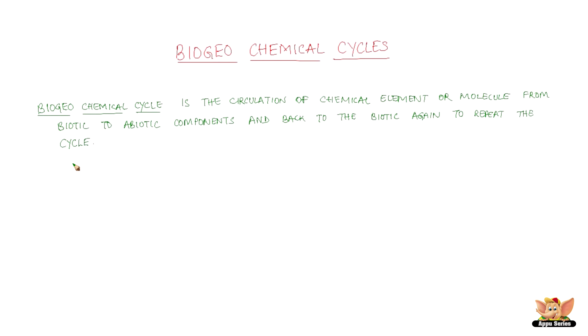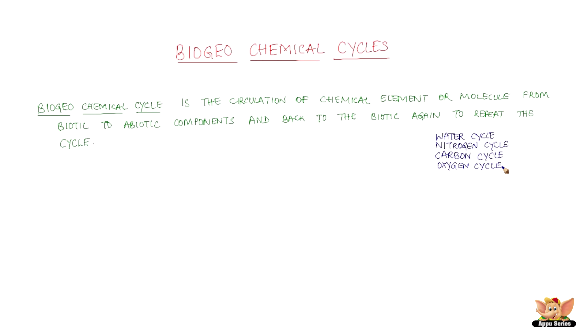It has biological, geological, and chemical factors and has repetition, hence the name biogeochemical cycle. There are many such cycles in nature: water, nitrogen, carbon, and oxygen cycle.